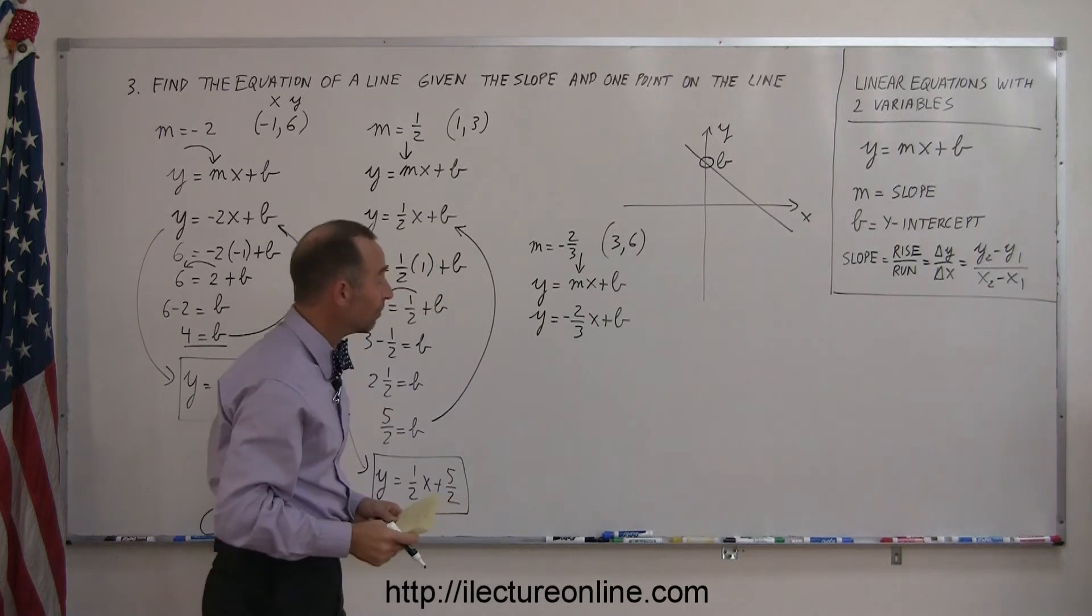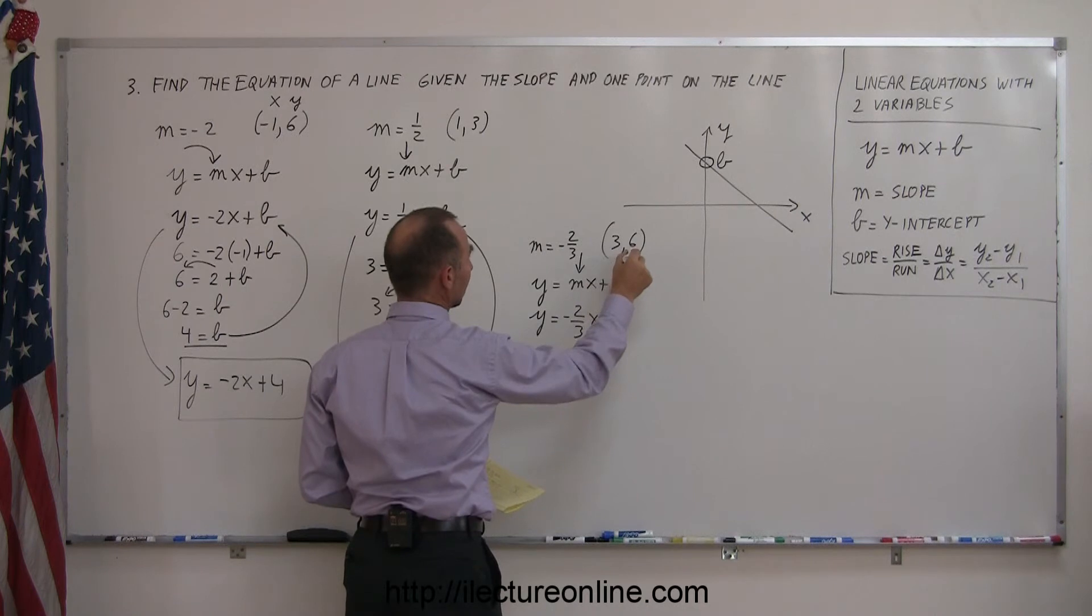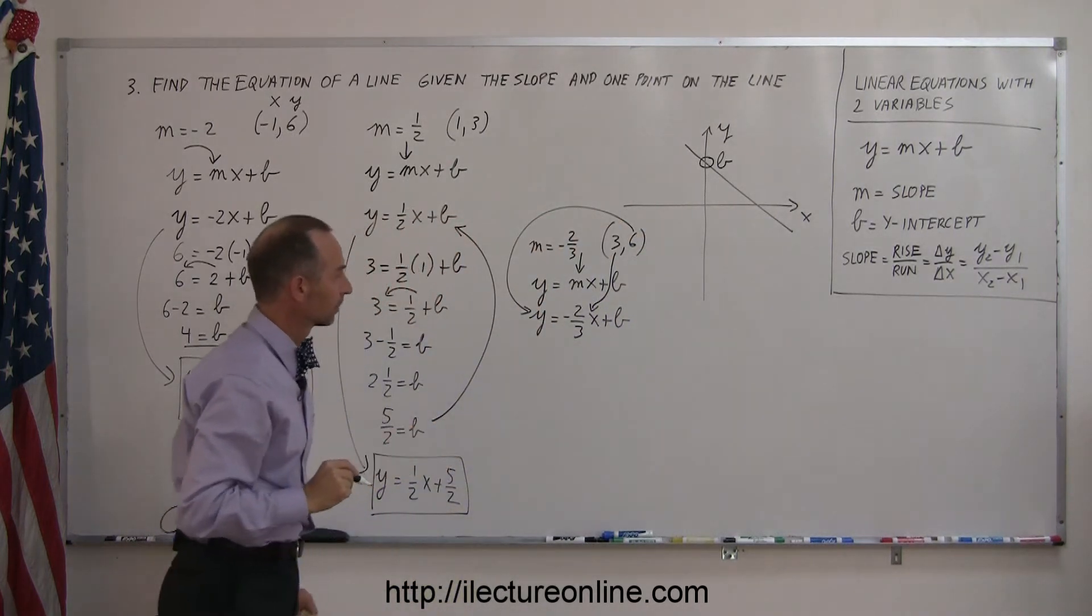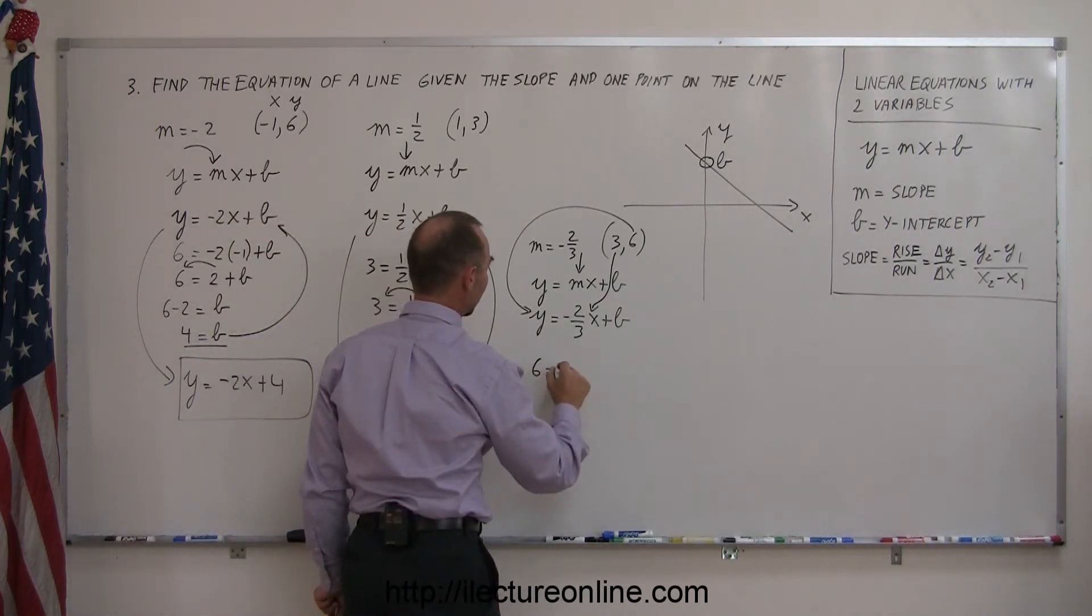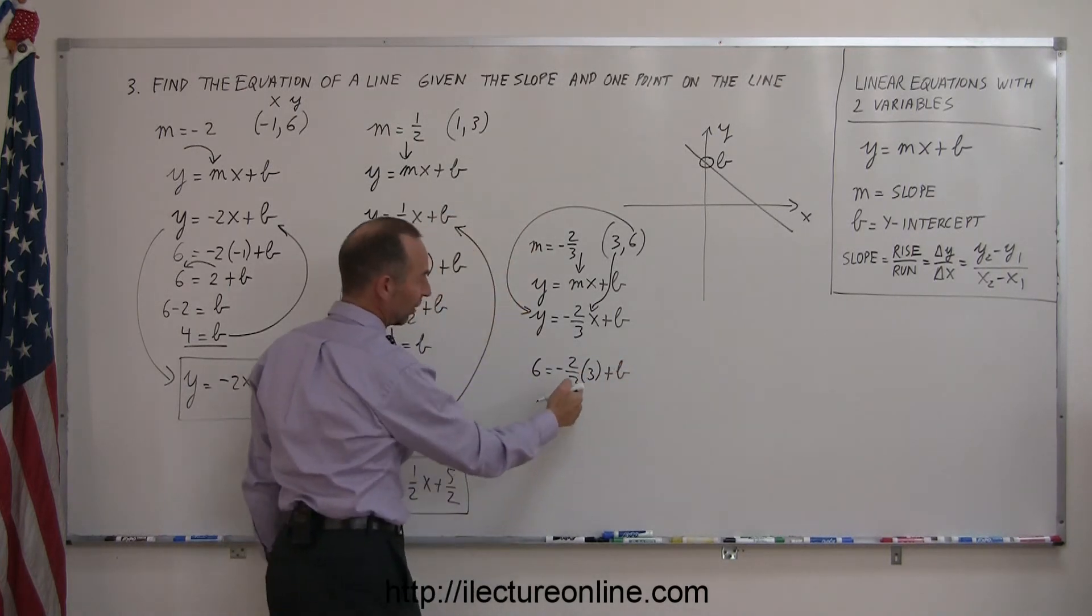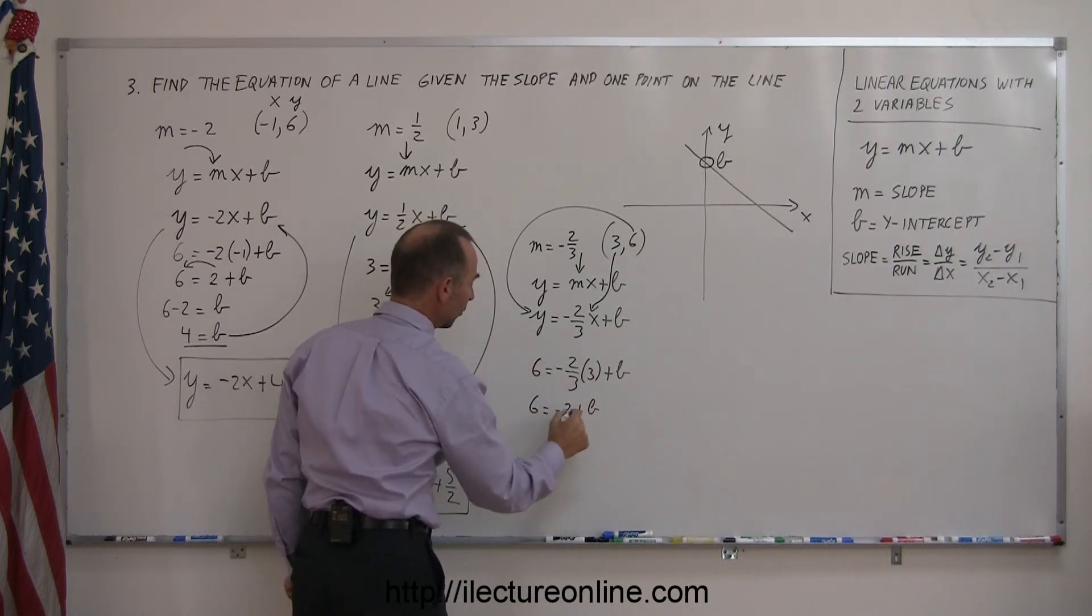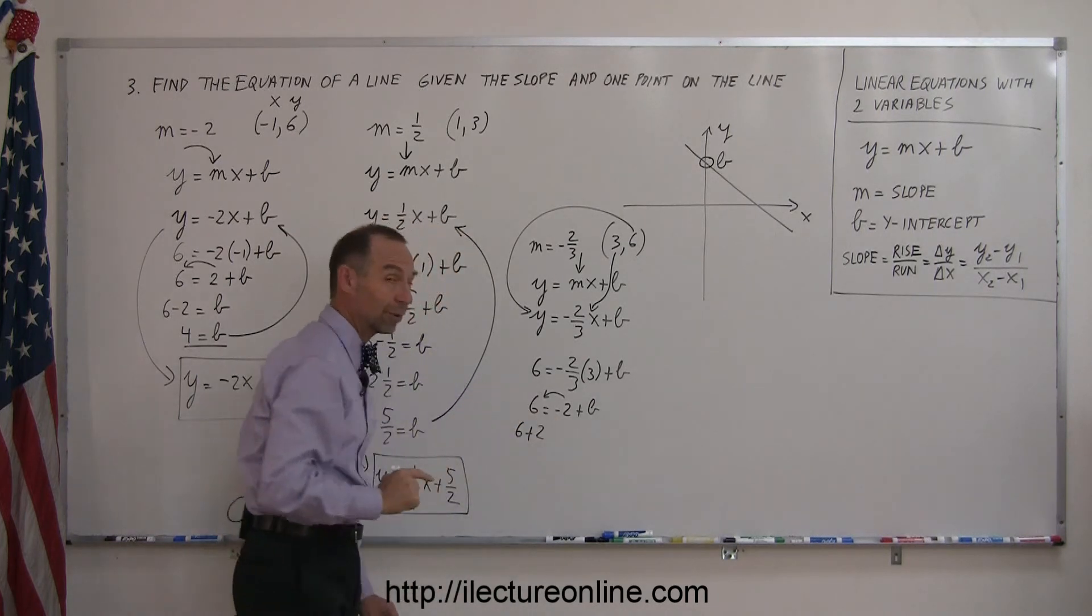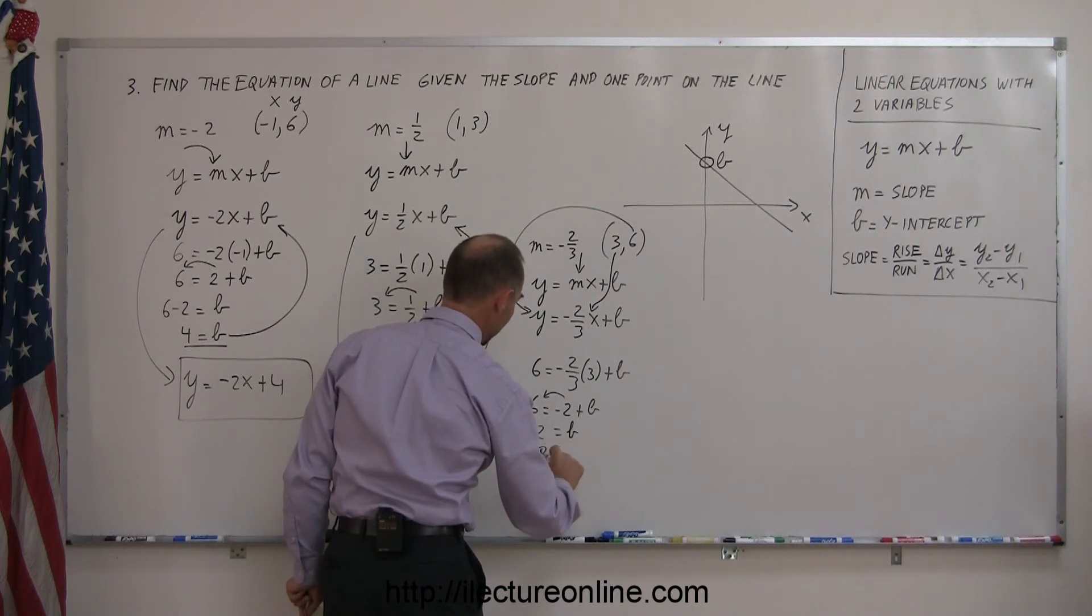Again, you take your x value, you plug it in here, take your y value, plug it in here, so you end up with 6 equals minus 2 thirds times 3 plus b. Notice that 3 divided by 3 is 1, so this can be written as 6 equals minus 2 plus b. Move the negative 2 over to the other side, you get 6 plus 2 now, because when you cross the equal sign, just change the sign, equals b, or 8 equals b.